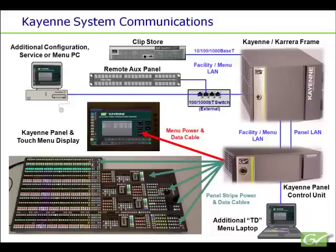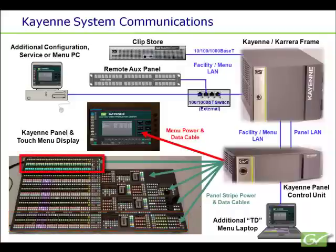a 4 mix effects or ME panel with a panel control unit, some menus, one remote auxiliary or aux panel, and a clip store connected. The Cayenne panel is connected to the panel control unit, referred to as the PCU, via individual cables as indicated by the green arrows, one for each stripe. A stripe is a panel module tray consisting of a source module, transition module, and a local EMEM module, and in some cases an additional module. The AuxBus module is also a stripe.